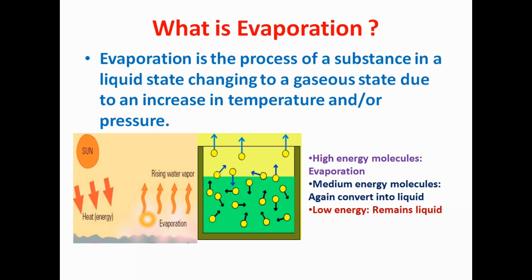Evaporation always happens at room temperature and room pressure. Now I will explain how this Evaporation occurs. Suppose this is water in a beaker. Evaporation always occurs on the surface water — it does not occur on the water below. It always occurs on the surface water.